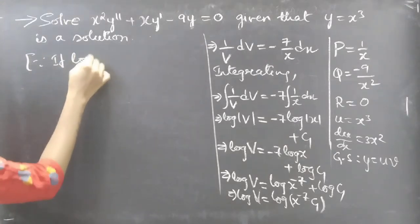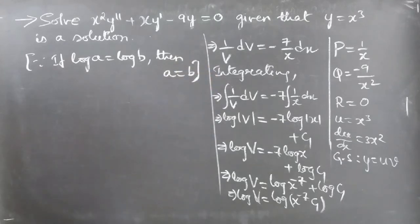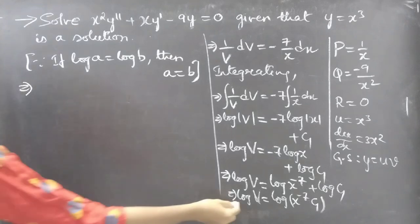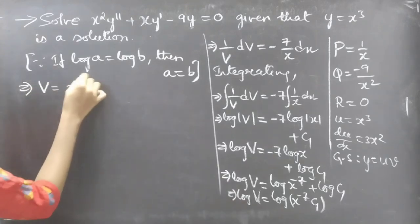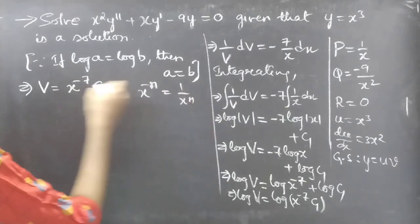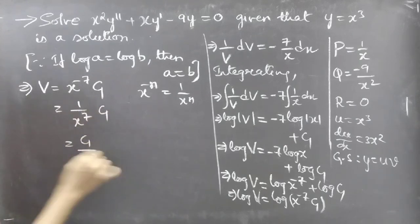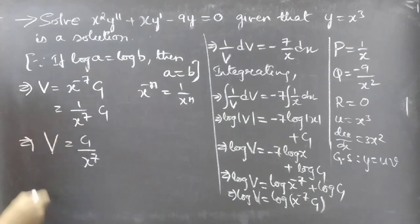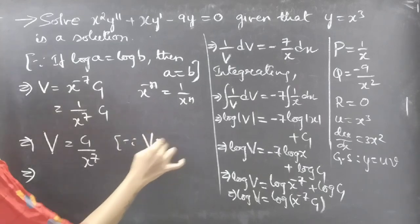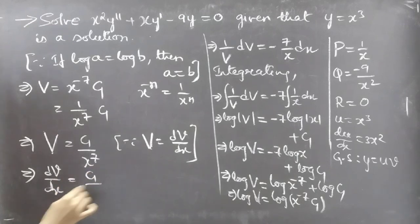Since log a = log b implies a = b, we can write V = C₁ · x⁻⁷. Since x⁻ⁿ = 1/xⁿ, we write x⁻⁷ = 1/x⁷, so V = C₁/x⁷. Since capital V = dv/dx (small v), replacing V gives dv/dx = C₁/x⁷, which equals C₁ · x⁻⁷.